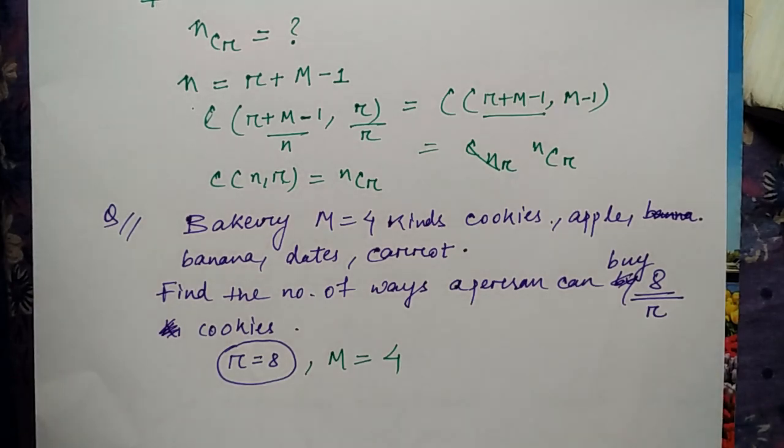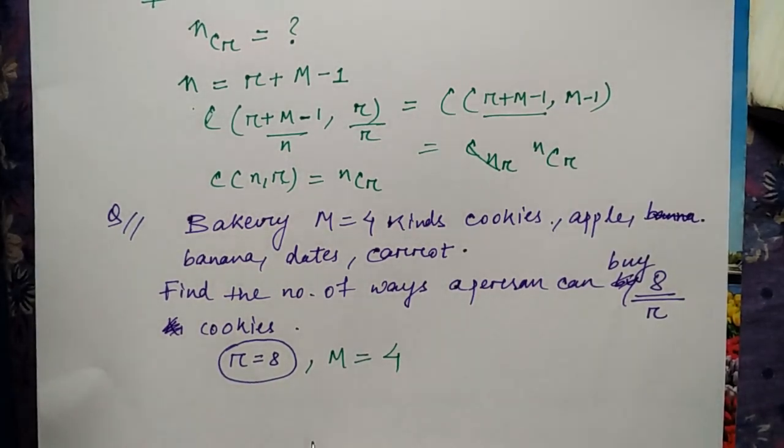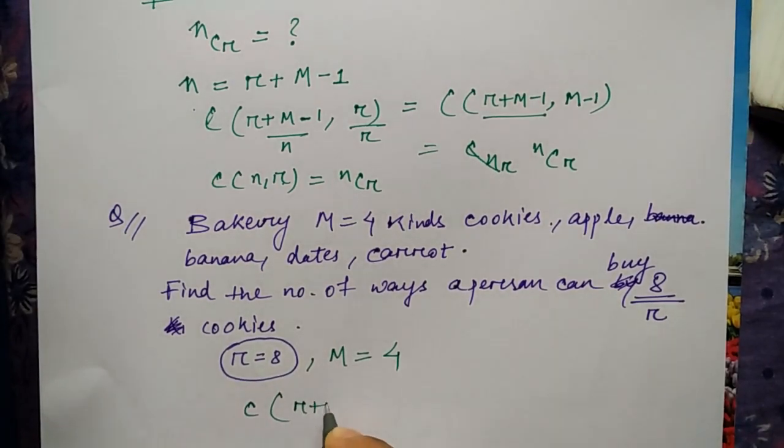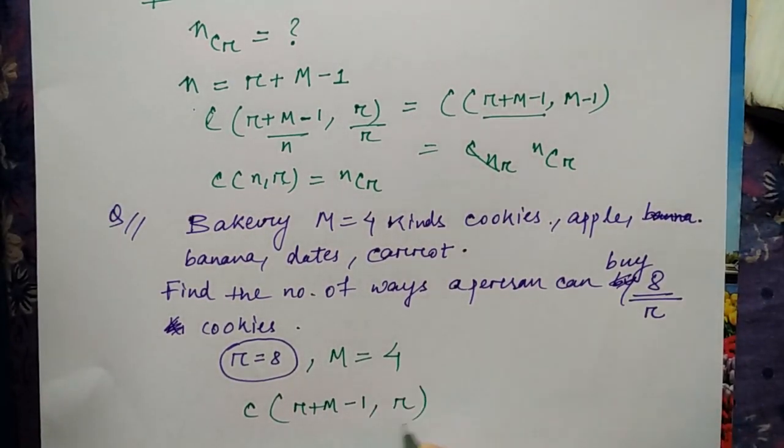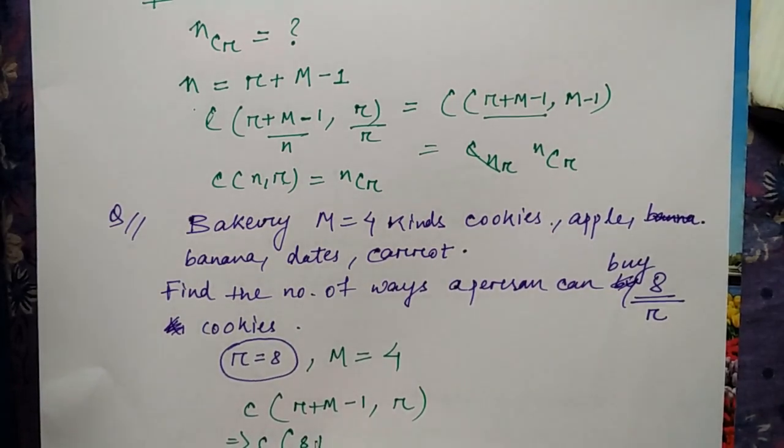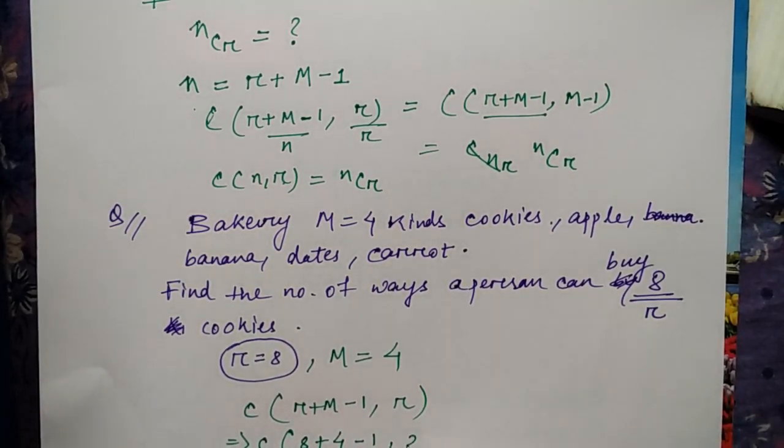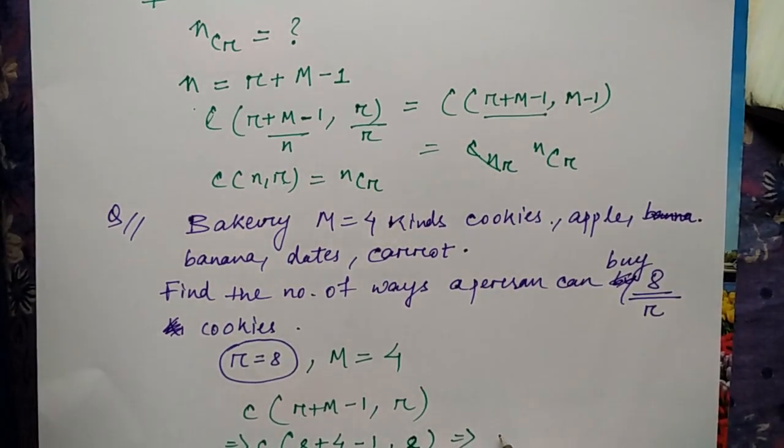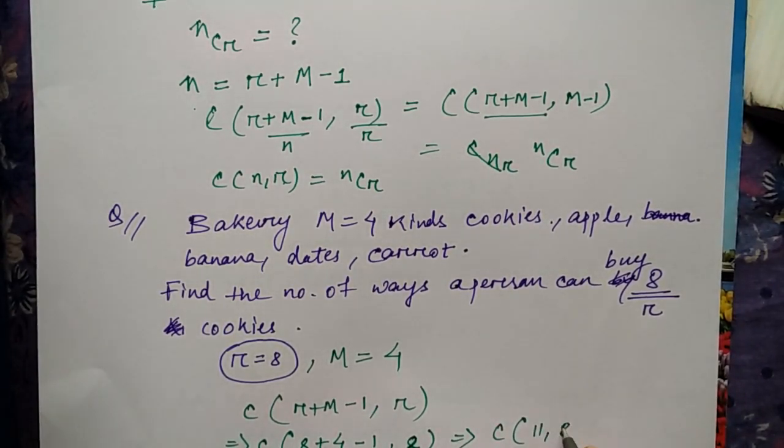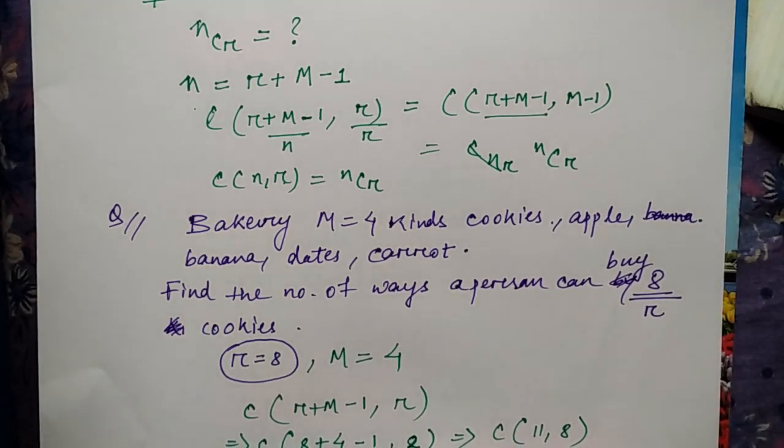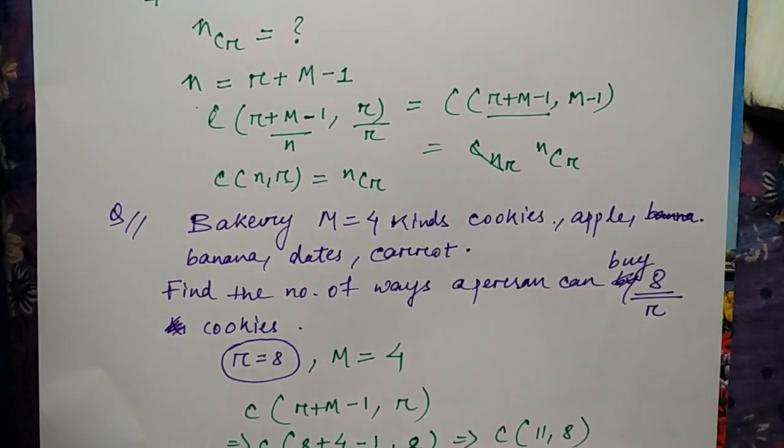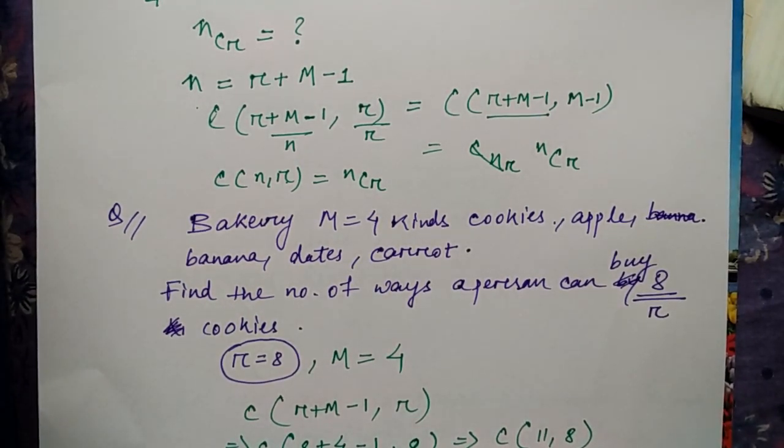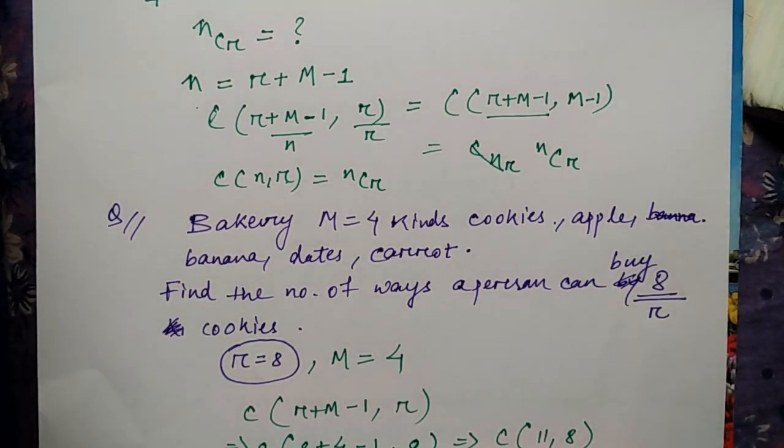So we can use the formula and try to find out C(r+m-1, r). So what will be the thing? r is eight plus m is four minus one, comma r. So eight - it will be how much? C(11, 8). So the formula is 11C8. Now you can find it as 11 factorial by r factorial into 3 factorial.